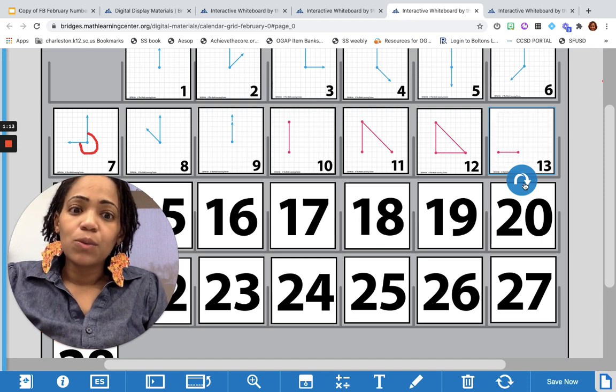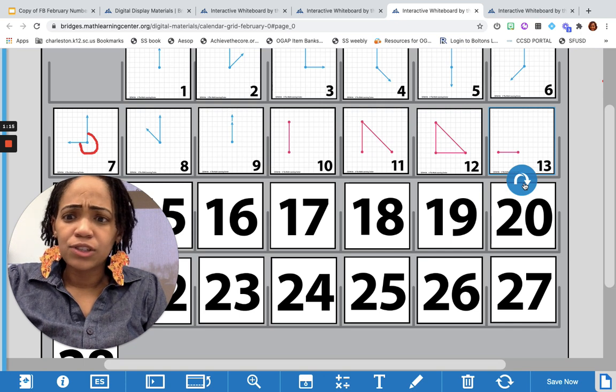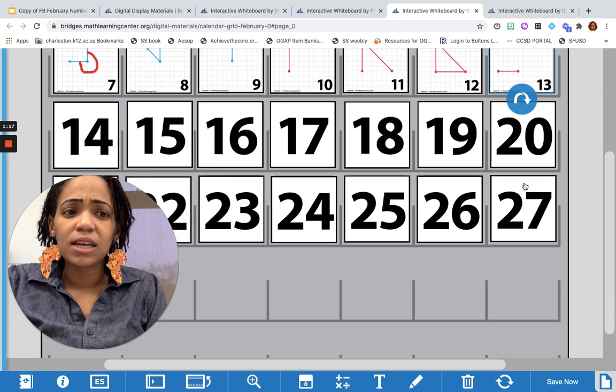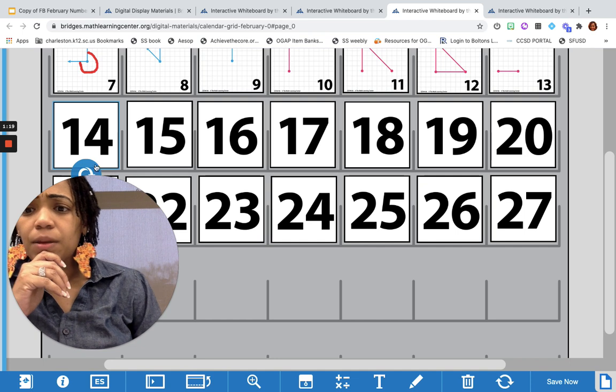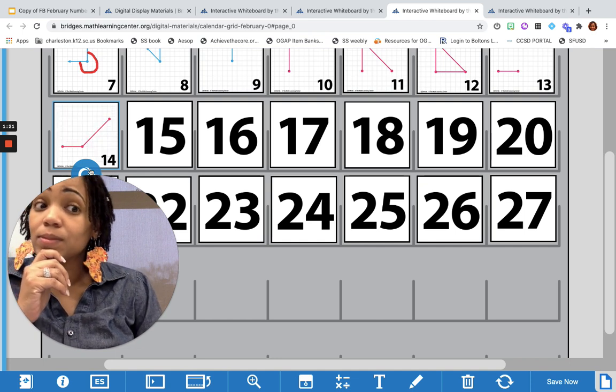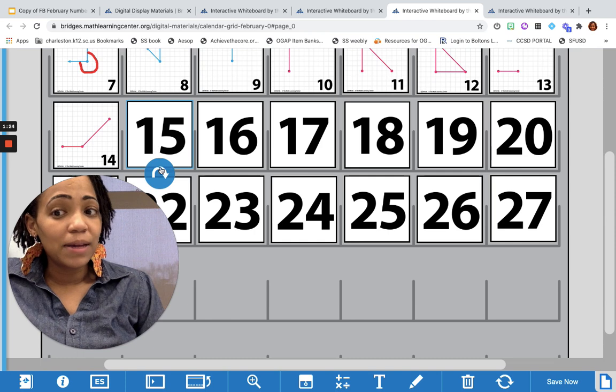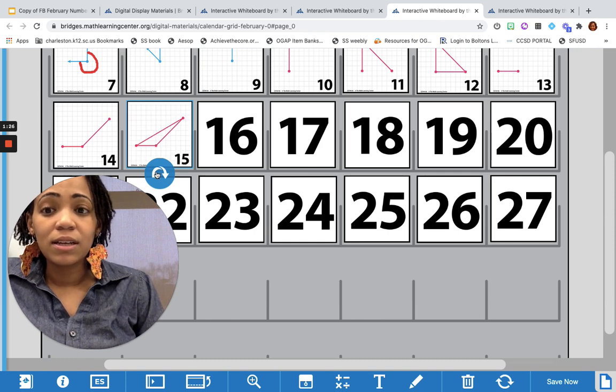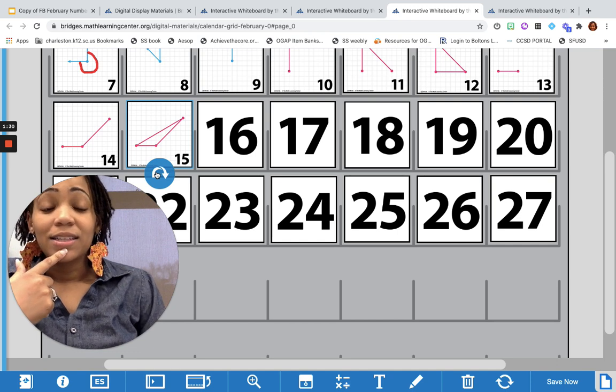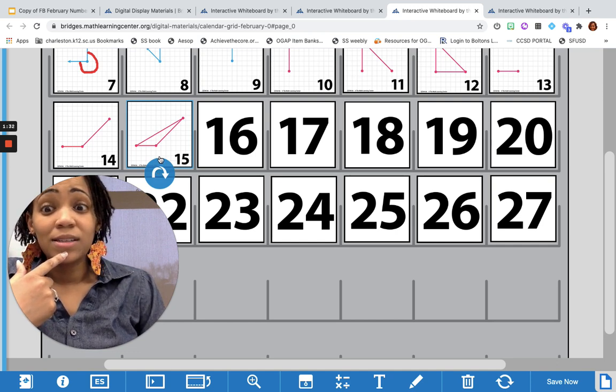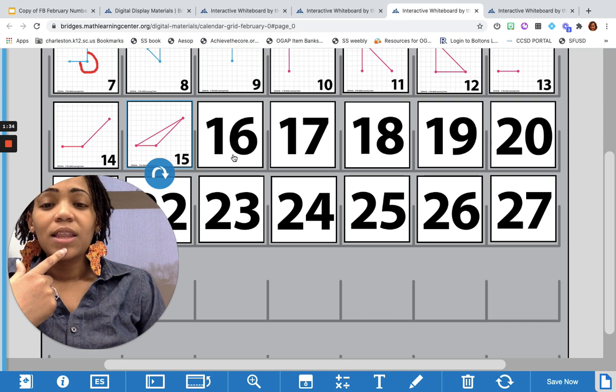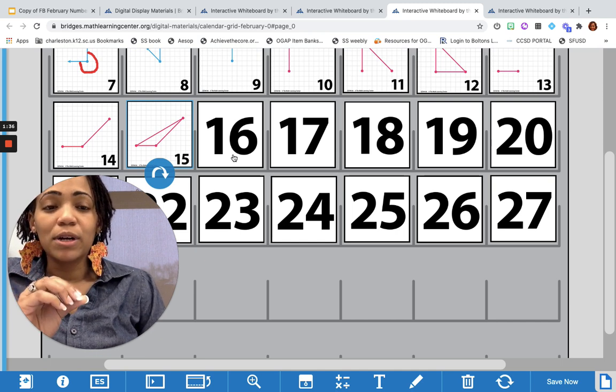So what do you assume the 13th would have looked like? Maybe a square? Well, it's just another line segment. Interesting. What about the 14th? Two line segments. So the 15th might be another triangle. Let's see. Yeah it is, but this time it's a different type of triangle because none of the sides are equal.